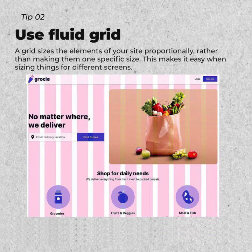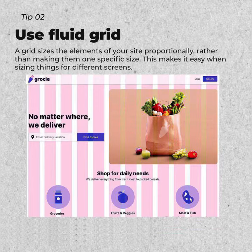Tip 02: Use Fluid Grid. A grid sizes the elements of your site proportionally rather than making them one specific size. This makes it easy when sizing things for different screens.